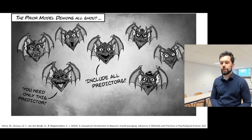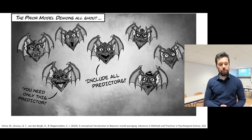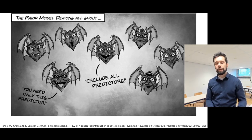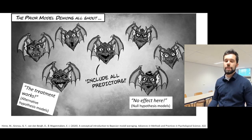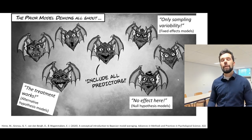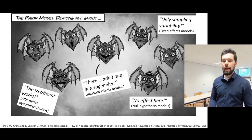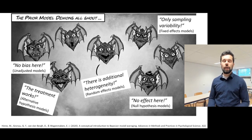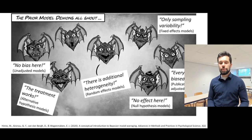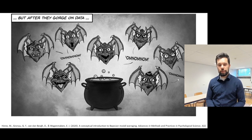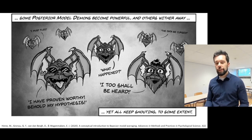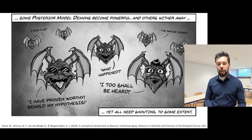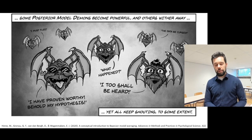To illustrate Bayesian model averaging, you can think of it as specifying different assumptions about the data, where each assumption is represented by a different model. In the meta-analytic setting, we have assumptions about the presence or absence of the effect, the presence or absence of heterogeneity, and publication bias. We feed these models with data, and models that fit the data best grow. Models that grow also speak more loudly, so we base inference more clearly on them. Here, the model representing presence of the effect becomes the largest, so we are more inclined to conclude that there is an effect.